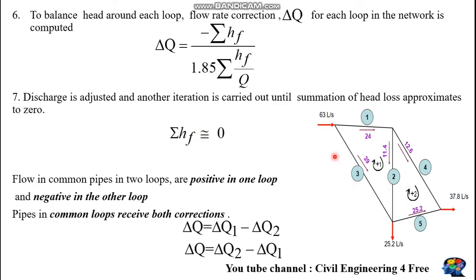Another aspect: if you have a common pipe — say pipe 2 is common for both loop 1 and loop 2 — then pipes in common loops receive a correction applied twice. The correction for the common pipe in loop 1 is correction 1 minus correction 2, and for loop 2 it is correction 2 minus correction 1.